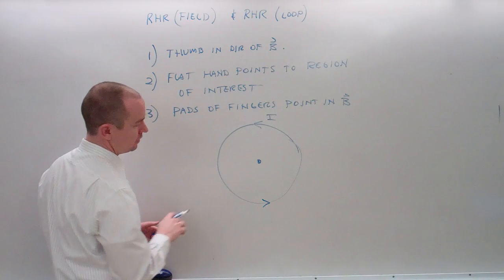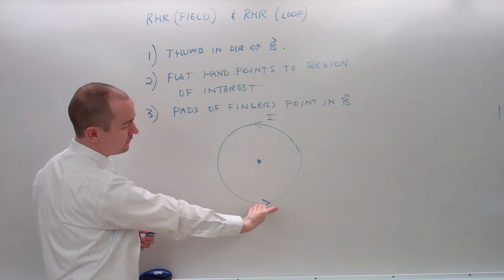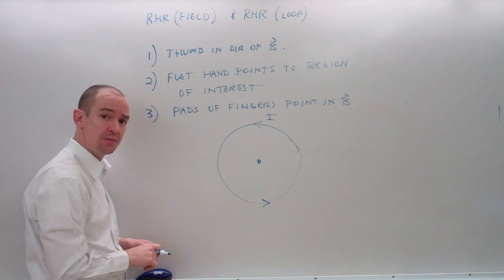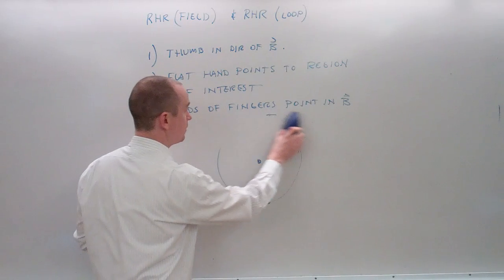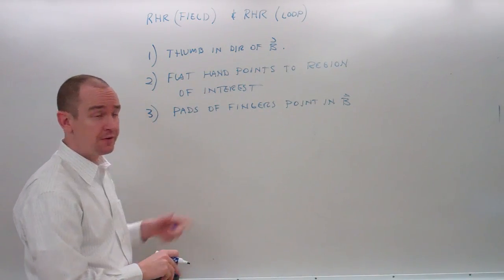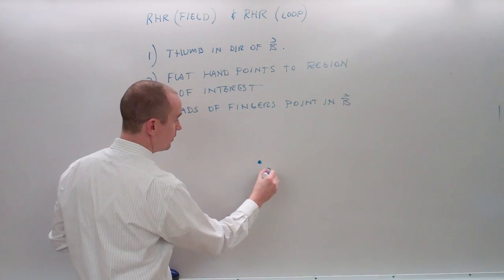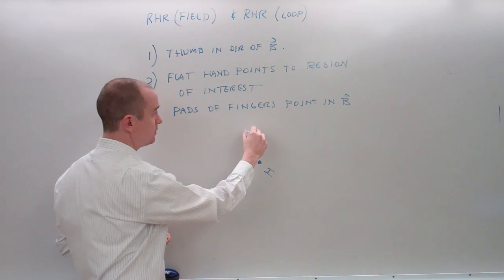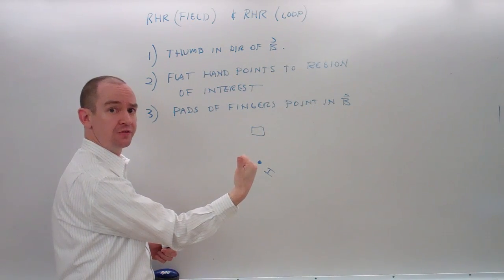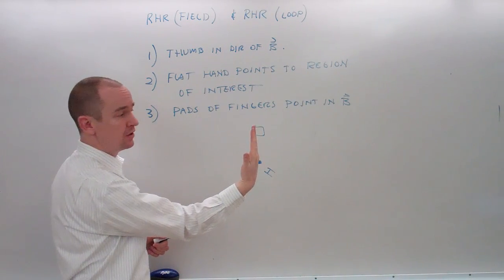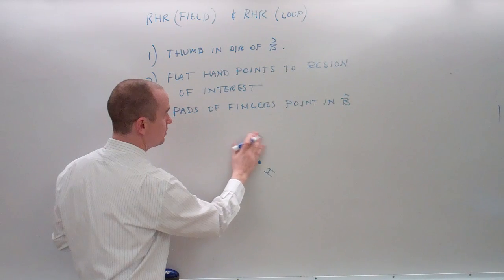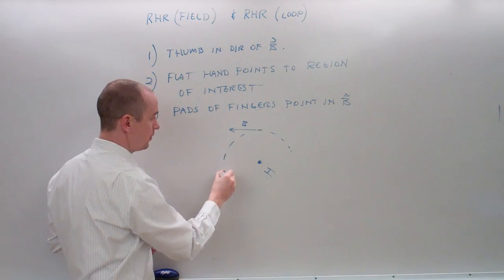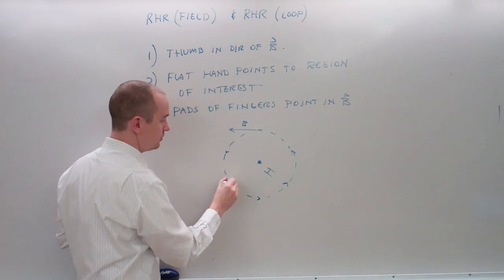What about down here? The current is going in that direction. Flat hand, points to where I care about — the pads of the fingers are pointing out. So, once again, the magnetic field is pointing out of the board. Now, imagine a current-carrying wire where the current is coming out of the board. Thumb points in the direction of the current, fingers point to the region of interest, and the pads of my fingers point in the field direction at that exact location. This makes sense because a current-carrying wire generates a magnetic field that forms a circle around the wire.